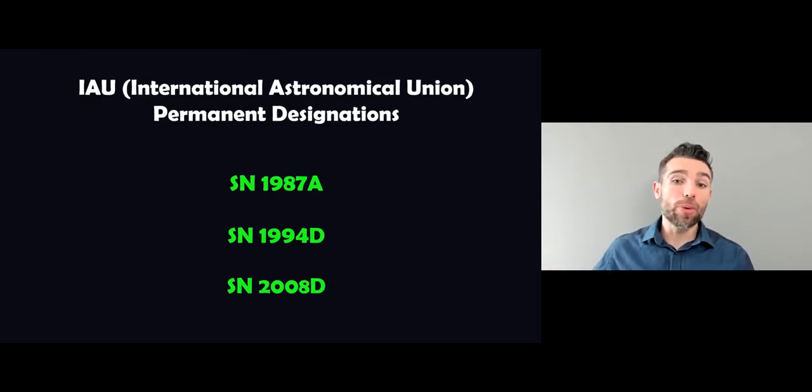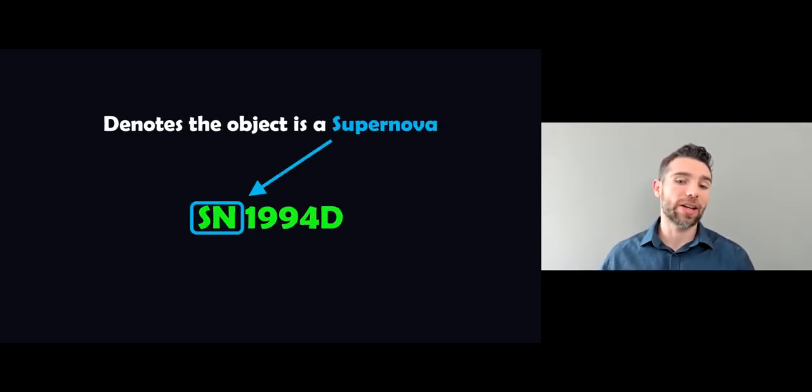This name is their permanent designation and it's issued by the International Astronomical Union. So SN1987A, SN1994D, SN2008D. Where does that name or classification or code actually come from? Because again it's not randomly generated, there is a method to how they're named.